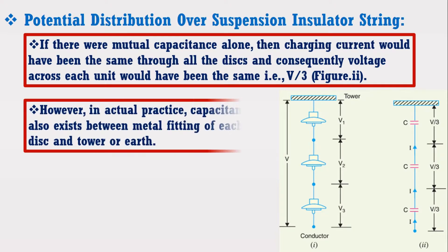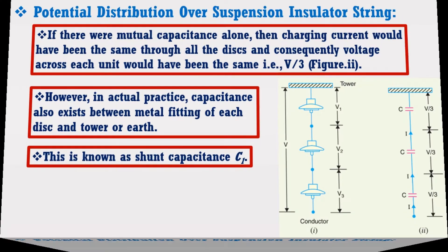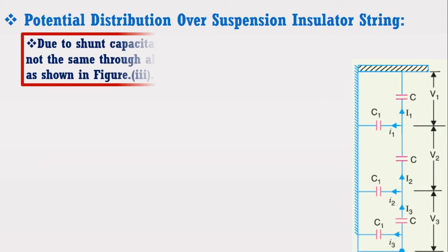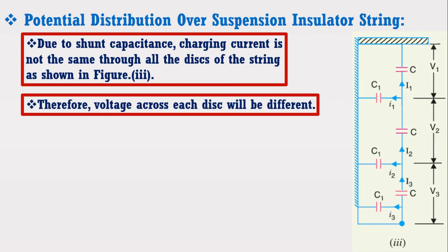However, in actual practice, capacitance also exists between the metal fittings of each disk and the tower or earth. This is known as shunt capacitance. Due to the shunt capacitance, charging current is not the same through all the disks of the string, as shown in figure 3. Therefore, voltage across each disk will be different. This is the reason why potential or voltage distribution is not uniform over the suspension insulator string.